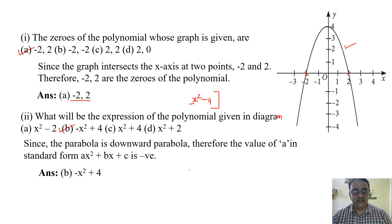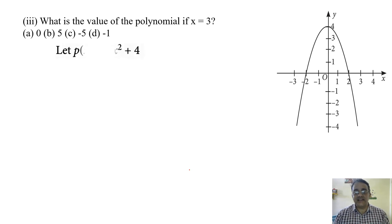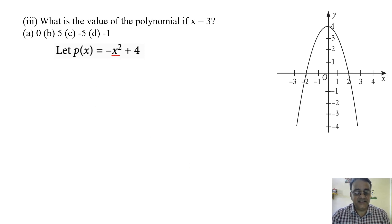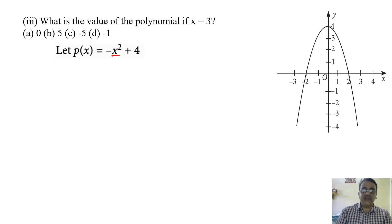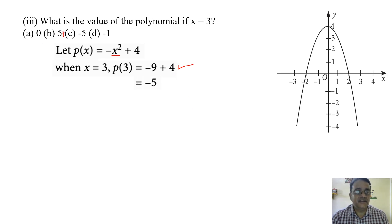What is the value of the polynomial if x equals 3? The polynomial is minus x squared plus 4. Substituting x equals 3: minus 9 plus 4 equals minus 5. The correct option is option C.